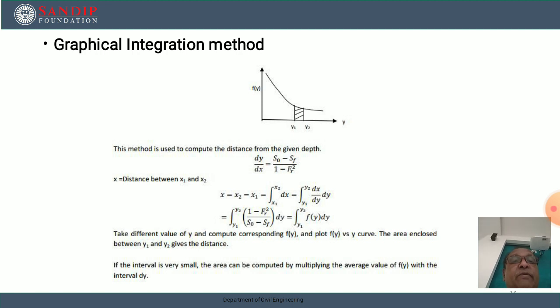So integration from y₁ to y₂ of (1 minus Fr²) divided by (S₀ minus Sf) dy. By simplifying we get integration of f(y) dy from y₁ to y₂.